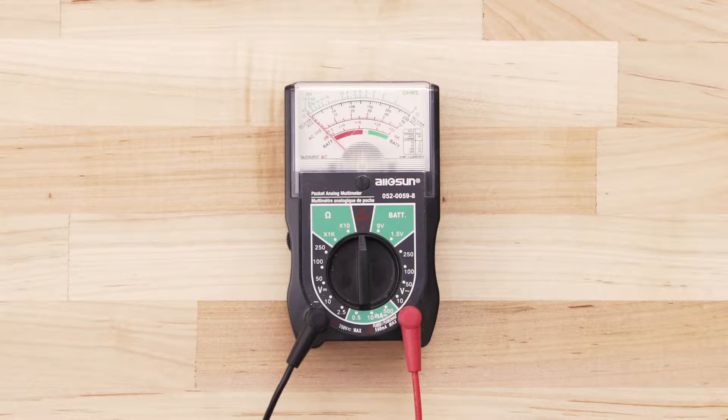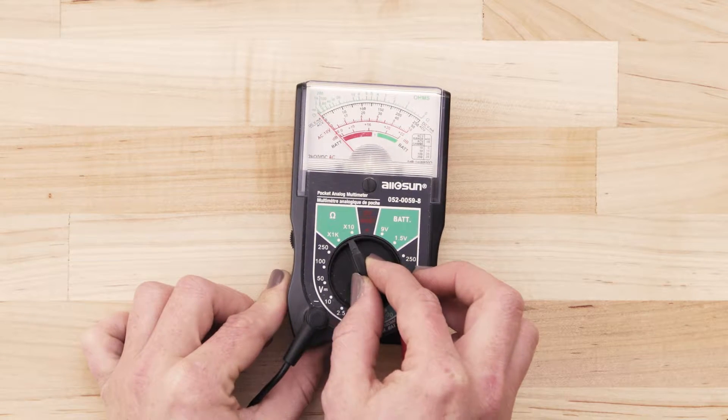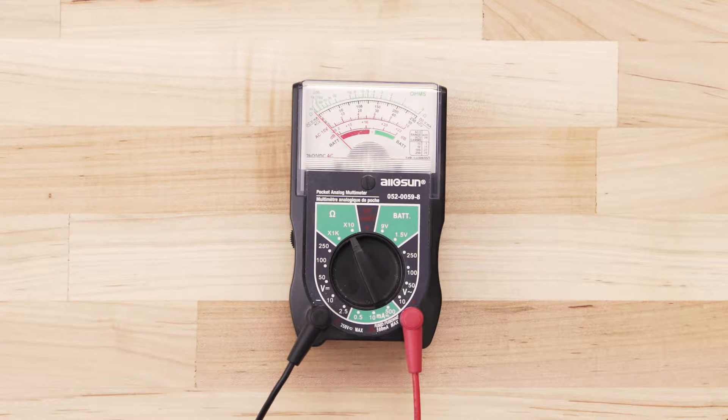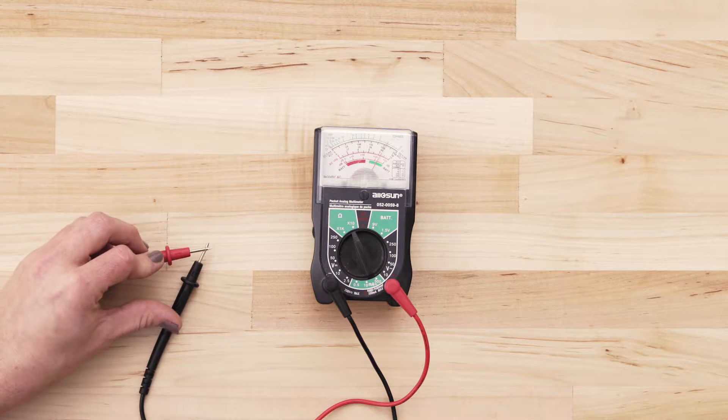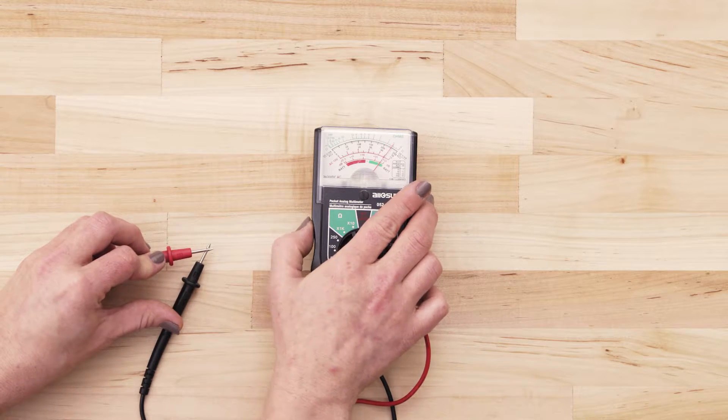If you use an analog multimeter, set the multimeter to the lowest ohms of resistance. Next, touch the probes together and adjust the needle until it's calibrated at zero.